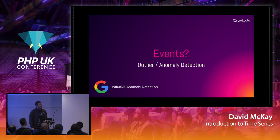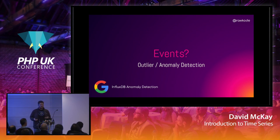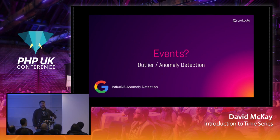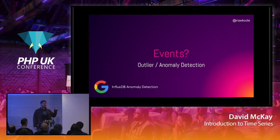For irregular time series events you cannot calculate the average — there's no predictability. There's an entire wealth of information on doing anomaly and outlier detection; you can Google that within InfluxDB and there are plenty of docs. If you want to store your logs inside InfluxDB you can, and there's a really good way to sample that over time.